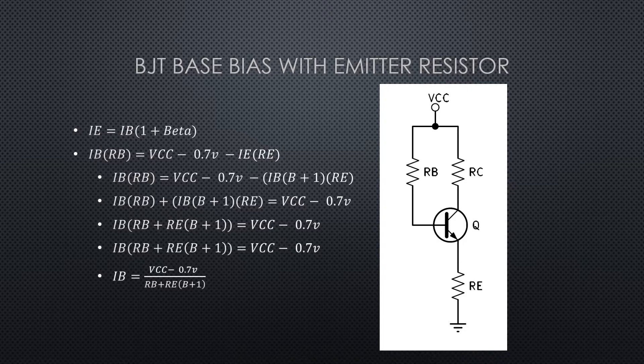Now if I get the IBs on the same side and factor out the IB, my final equation is IB equals VCC minus 0.7 volts divided by RB plus RE times beta plus one.